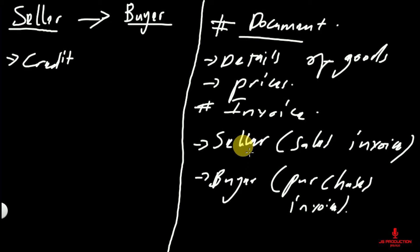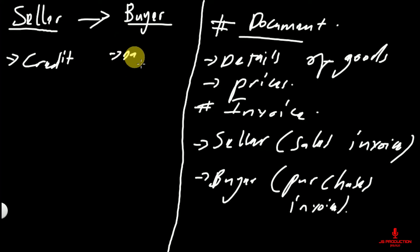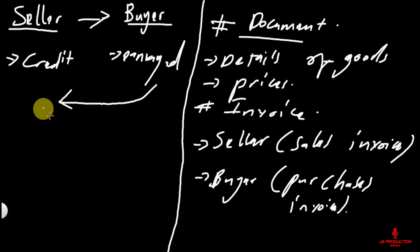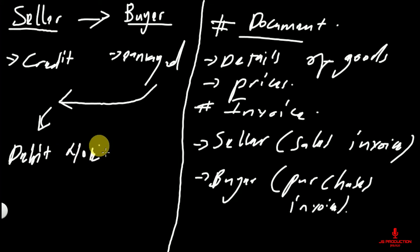When goods have reached the buyer, some of the goods may be damaged. If the buyer discovers that some of the goods that were sold to him were damaged, the buyer might want to return the goods to the seller. When that happens, the buyer is going to prepare a document referred to as the debit note, which shows the details of the goods and the reason why they are being returned to the seller.